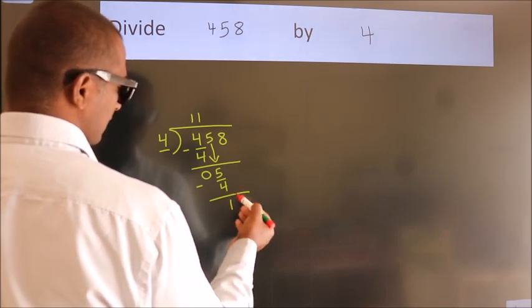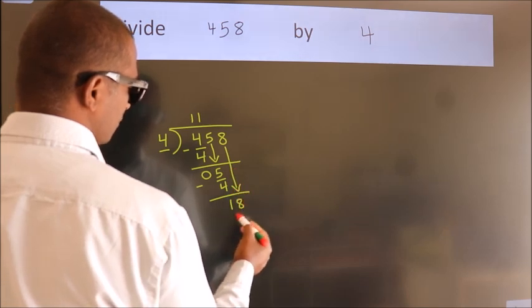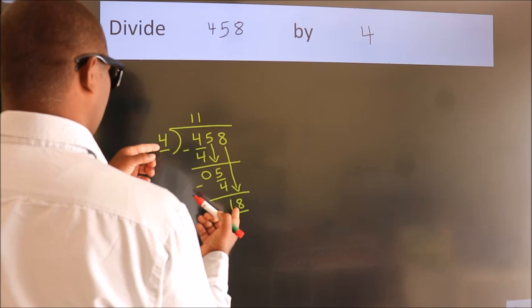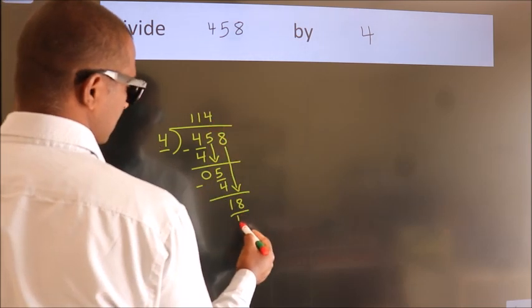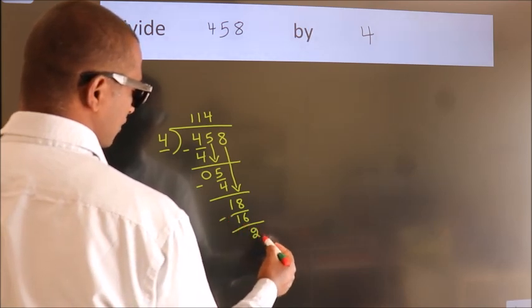After this, bring down the next number, so 8 comes down, making 18. A number close to 18 in the 4 table is 4 fours, 16. Now we subtract and get 2.